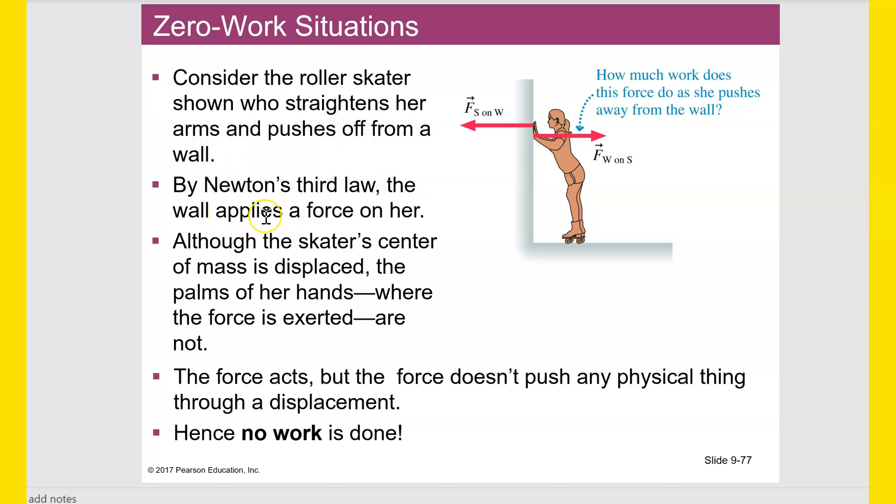All right right here consider the roller skater shown who straightens her arms and pushes off from a wall. By Newton's third law the wall applies a force on her. Although the skater's center of mass is displaced the palms of her hands where the force is exerted are not. The force acts but the force doesn't push any physical thing through a displacement hence no work is done. All right if what that just said bothers you you are not alone. It bothers me too. It bothers many good physics students. Now I would have to say if her center of mass moves then the force that acts on that center of mass does do work. We know that much.